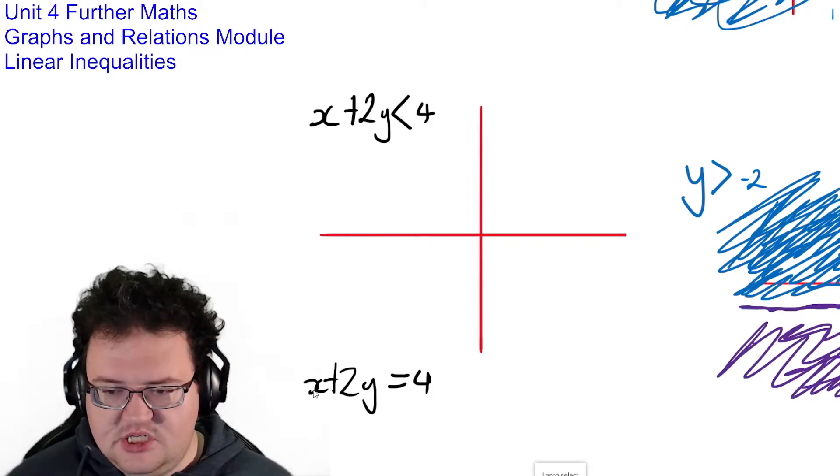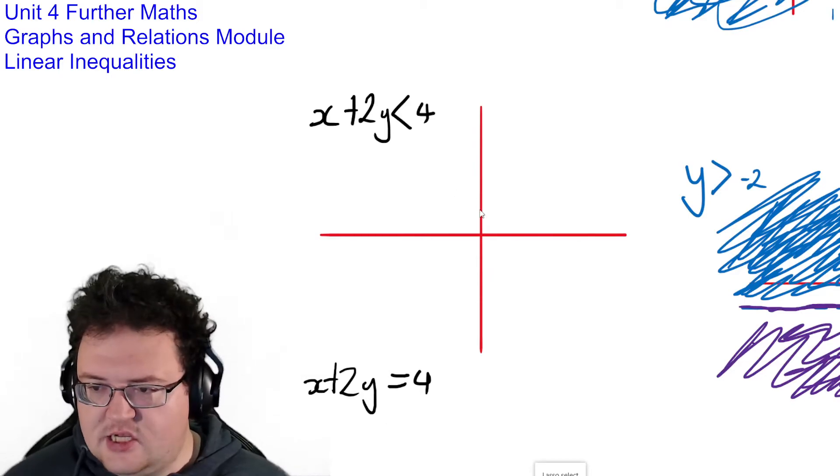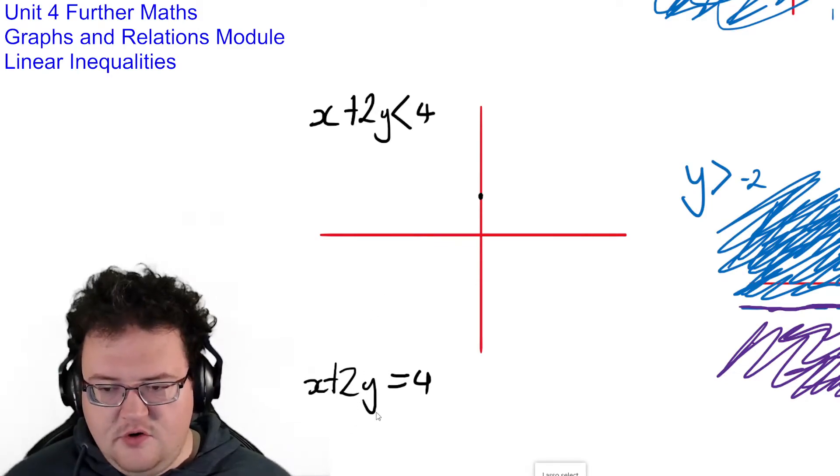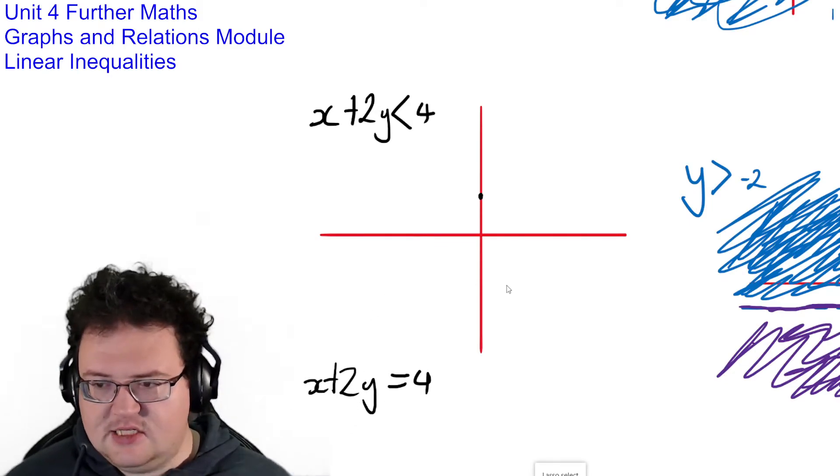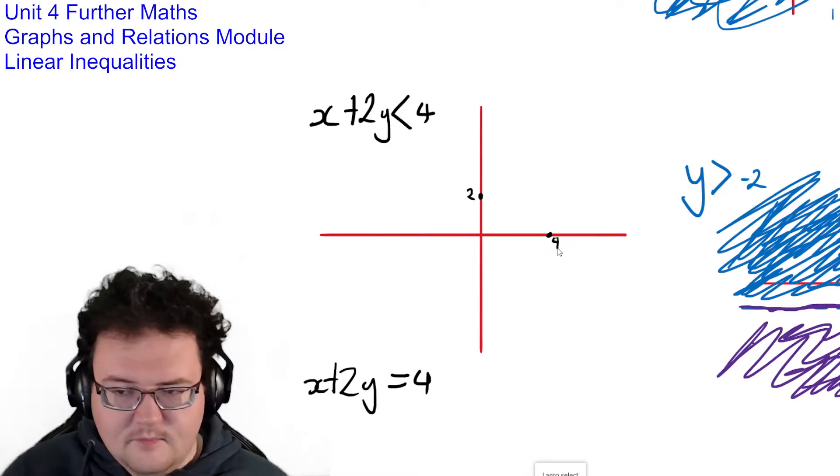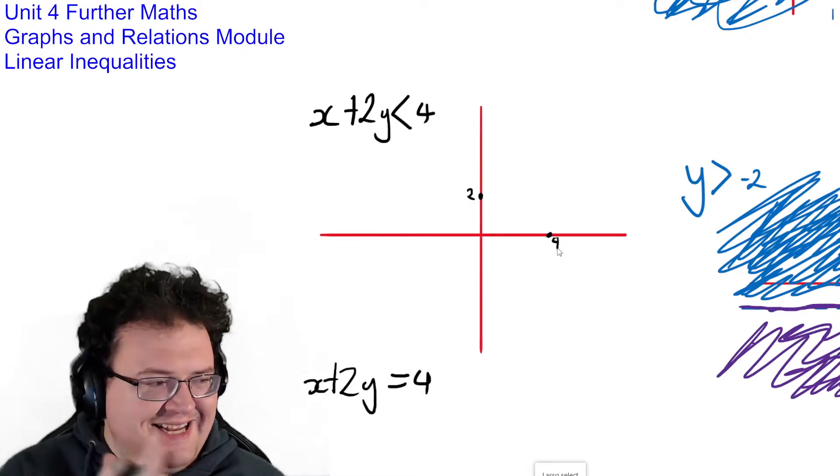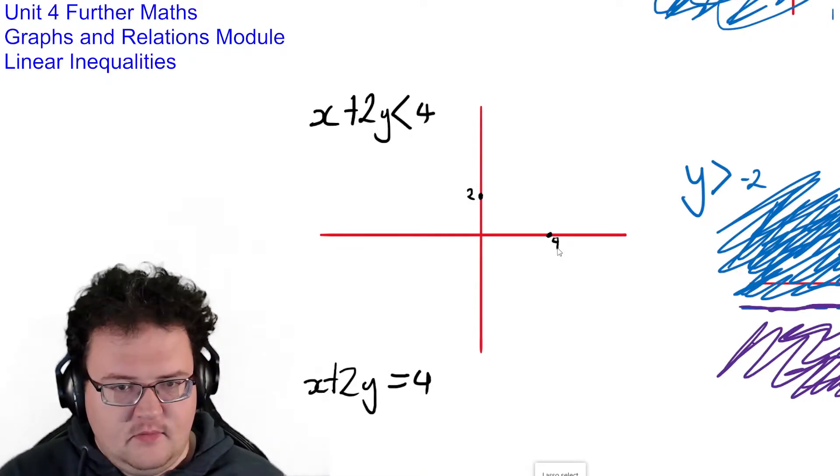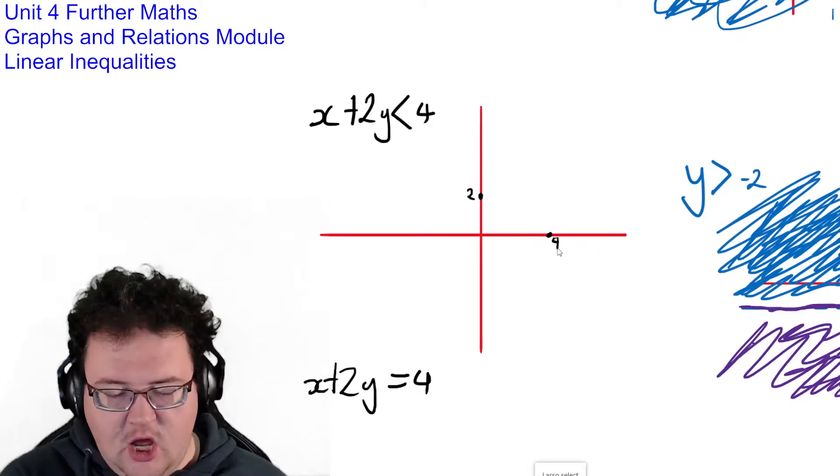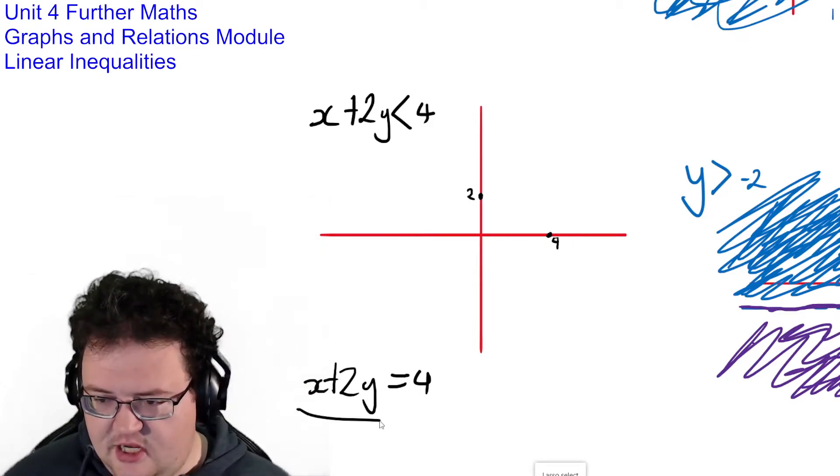When x equals 0, y is going to equal 2. And when y equals 0, x is going to equal 4. So I've got there 2 and 4. So this is in intercept form. So I've got the intercepts for this line. Specifically this line here.